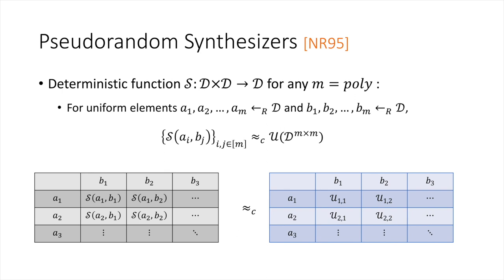We say that a pseudorandom synthesizer is secure if for any polynomial M, sampling 2M uniformly random elements A1 through AM and B1 through BM, and applying the synthesizer to each pair (Ai, Bi), the result is computationally indistinguishable from M² independent uniformly random elements in the same domain.